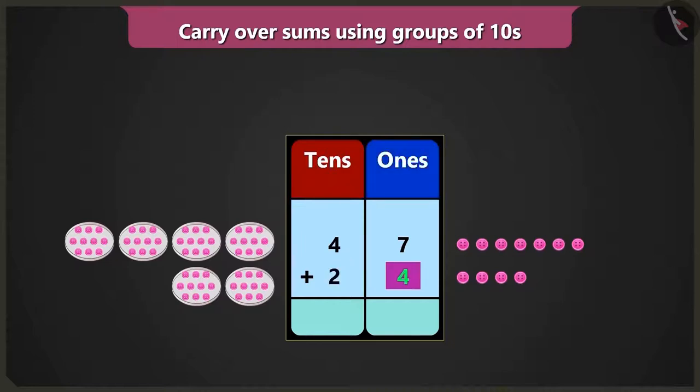Now in the box of ones, when 7 ones are added to 4 ones, we count after 7, 8, 9, 10 and 11. 11 which means there are 1 ten and 1 one. Now write 1 in the ones place and 1 ten in the box of tens right on top in small letters, thus carry over 1 ten.